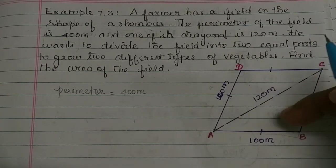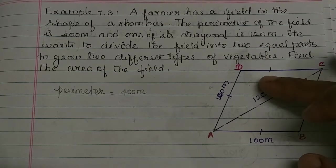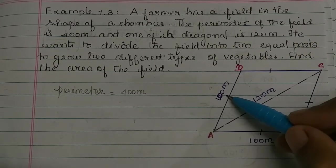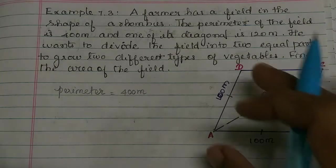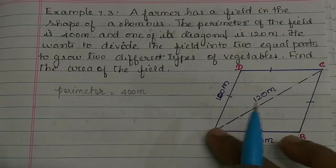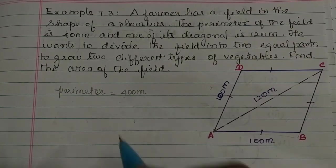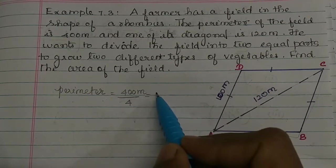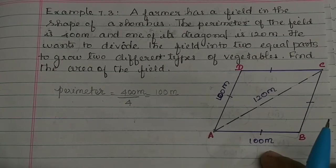If you divide the rhombus into two equal triangles, you can find the area using the triangle formula. Now, we have the perimeter: 400 meters. AB plus BC plus CD plus DA equals 400. Since all 4 sides are equal, divide by 4 — we get the length of one side. 400 divided by 4 equals 100 meters. So for the rhombus, one side is 100 meters.